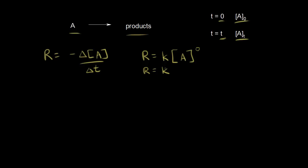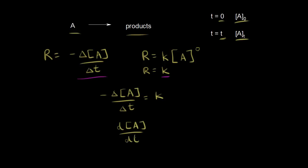Next, we can set these equal. We can say that K is equal to the negative change in the concentration of A over the change in time. So the negative change in concentration of A over change in time equals the rate constant K. We can think about our calculus: instead of writing change in A over change in time, we write the rate of change of the concentration of A with respect to time, with our negative sign, equals K. So we're ready to think about our differential equation.